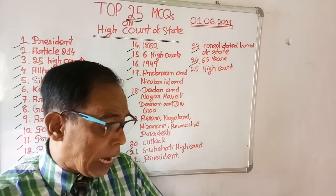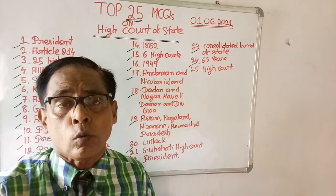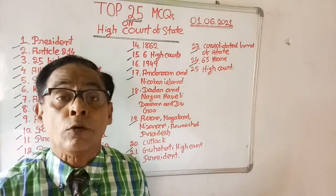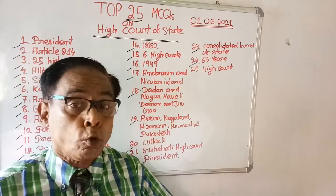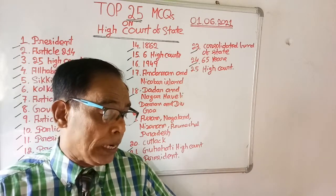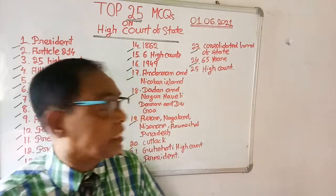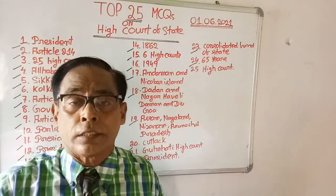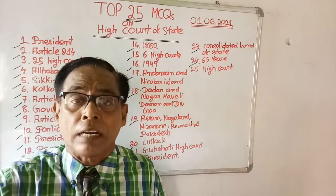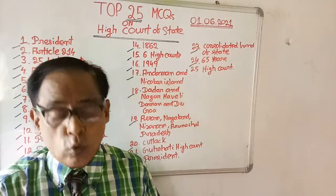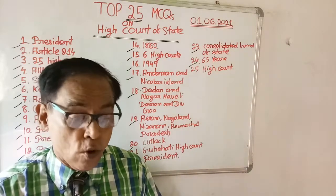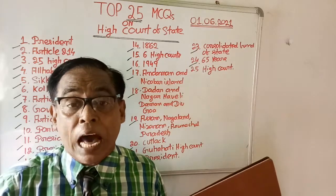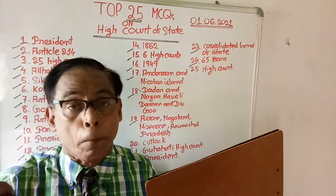Question number seventeen: Calcutta High Court has common jurisdiction over which areas? The right answer is that Calcutta High Court has jurisdiction over West Bengal and the Andaman and Nicobar Islands. We have now completed 17 questions out of 25, so 17 important pieces of information regarding the High Court are now in your hand.